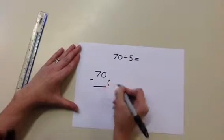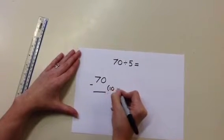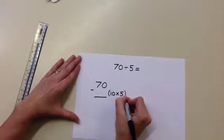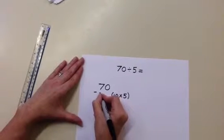We are using our multiplication knowledge to help us. So we know that 10 groups of 5 is 50 and that we can subtract 50 from 70. Underline the 10 as this tells us how many groups of 5 we are taking away.